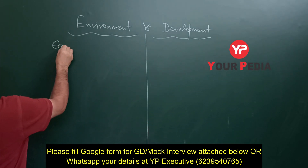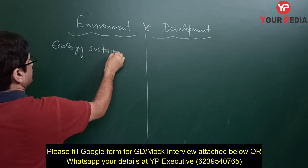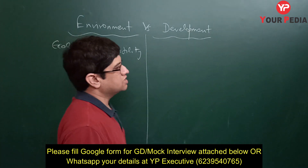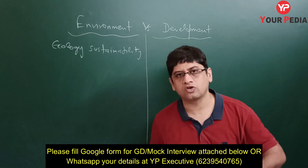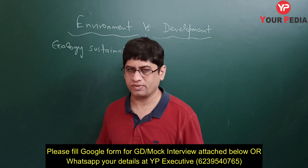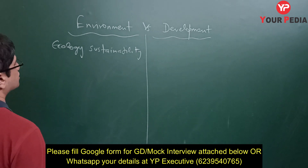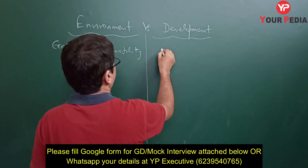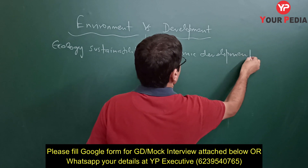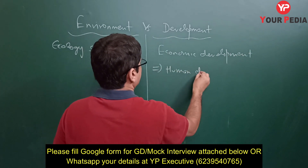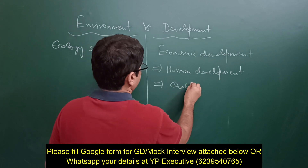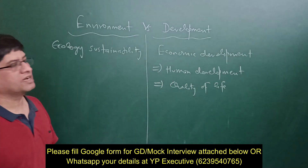The knowledge part includes environmental and ecological sustainability. I am writing here — you can simultaneously write in your copy. The best way to prepare is to keep a dedicated copy. Every day one topic comes, and you can make notes. Once you do 100 to 200 topics, you will understand how topics are prepared. Environmental and ecological sustainability, economic development — which is further related to human development and quality of life.